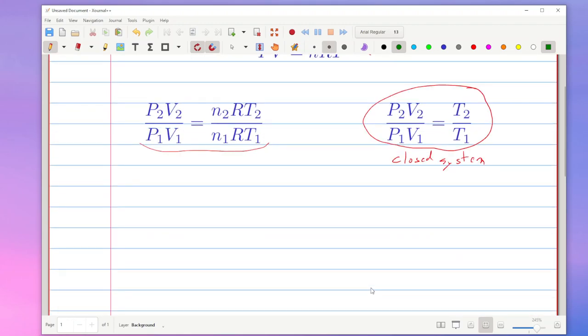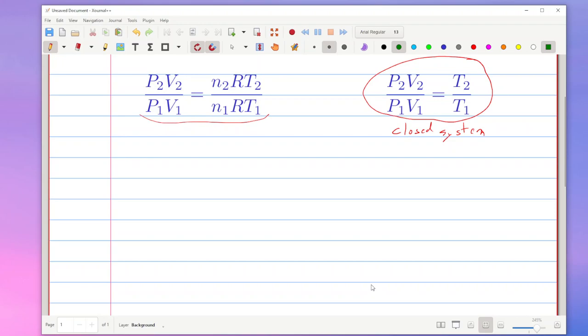I'm not going to re-go over how we get this particular thing, but assuming we have a closed system, then I could take a look at a constant temperature situation, which basically means that T1 and T2 are equal to each other. And this is also called isothermal.